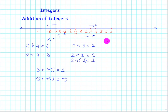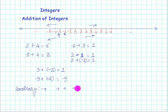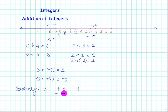Let me explain a simple rule or corollary you can apply in your exam. First: if you have a positive number and you add a positive number, you always get a positive number — for example, 2 plus 4 equals 6. Second: if you have a negative number and you add a negative number, you always get a negative number — for example, minus 3 plus minus 2 always gives a negative number.